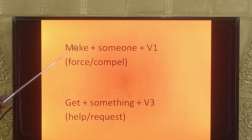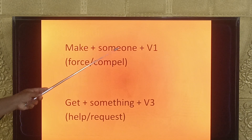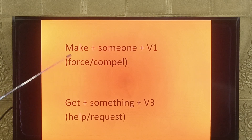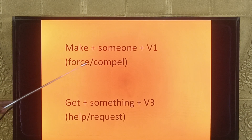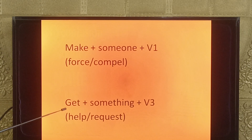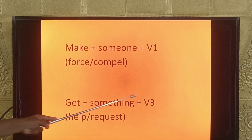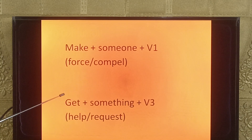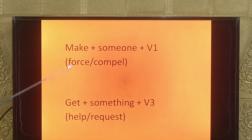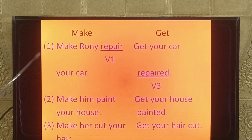With 'make', the structure is: make + someone (noun or pronoun) + V1 form. Make is used to force or compel someone. On the other hand, with 'get', the structure is: get + something (object) + V3 (past participle). Get is used to help or request. When a person is involved directly, use make; for a third person doing the action, use get.